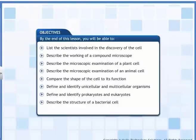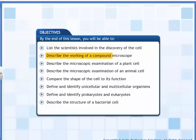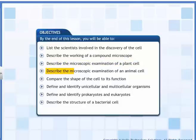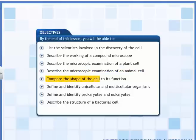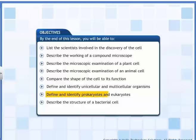By the end of this lesson, you will be able to: list the scientists involved in the discovery of the cell; describe the working of a compound microscope; describe the microscopic examination of a plant cell; describe the microscopic examination of an animal cell; compare the shape of the cell to its function; define and identify unicellular and multicellular organisms; define and identify prokaryotes and eukaryotes; and describe the structure of a bacterial cell.